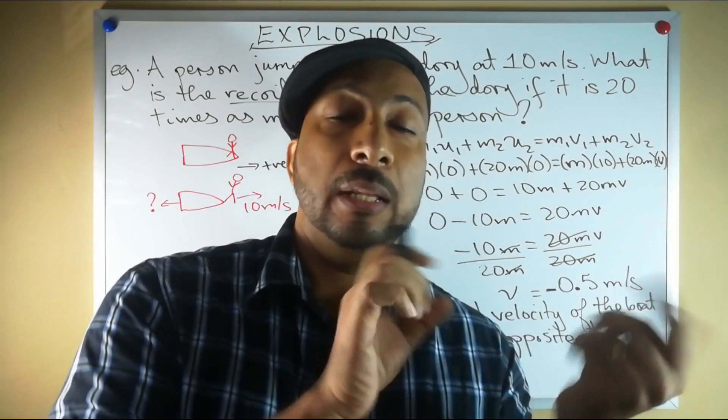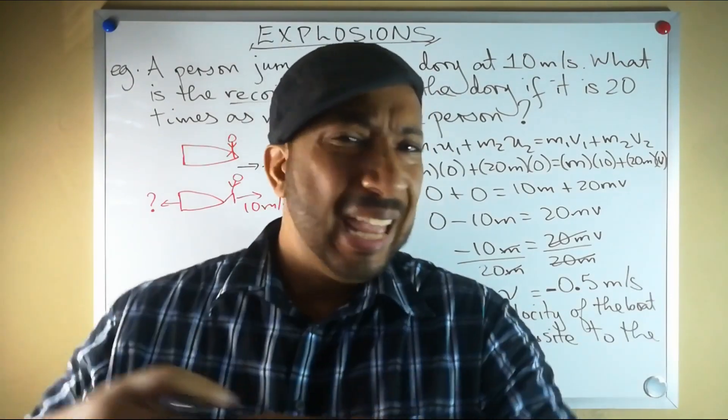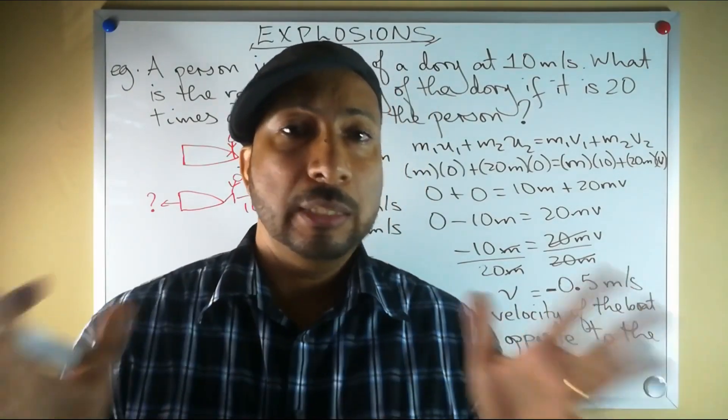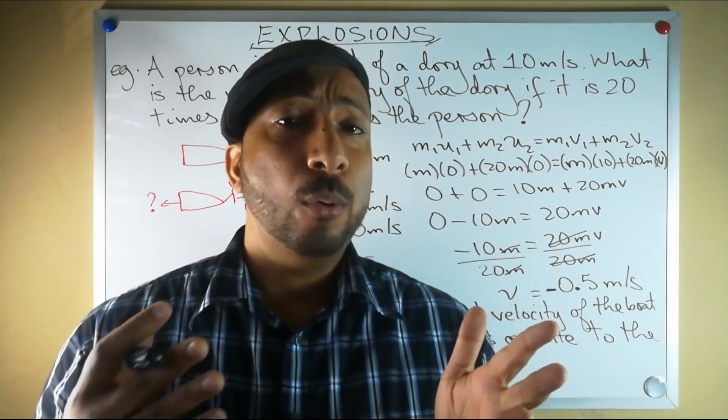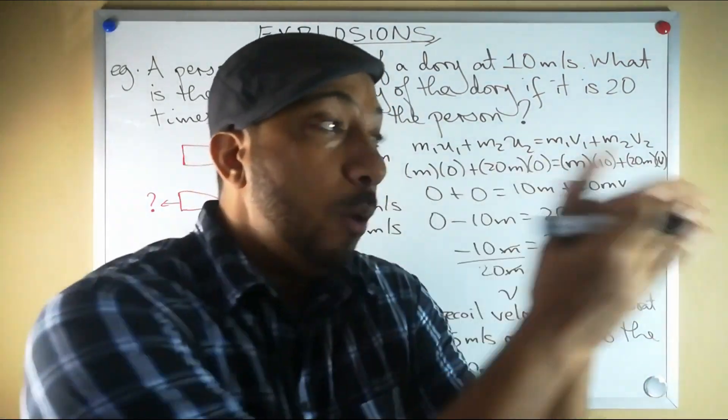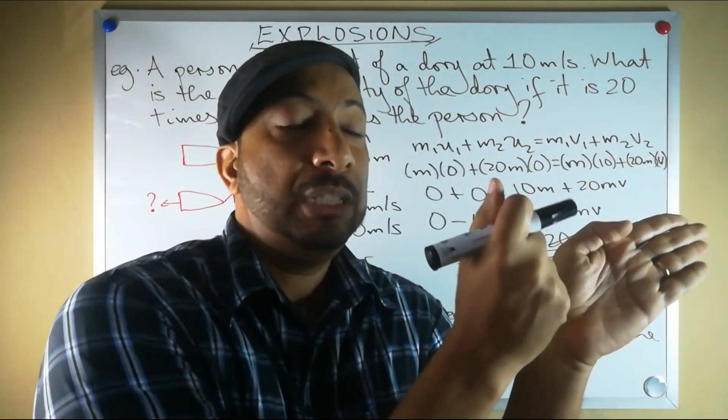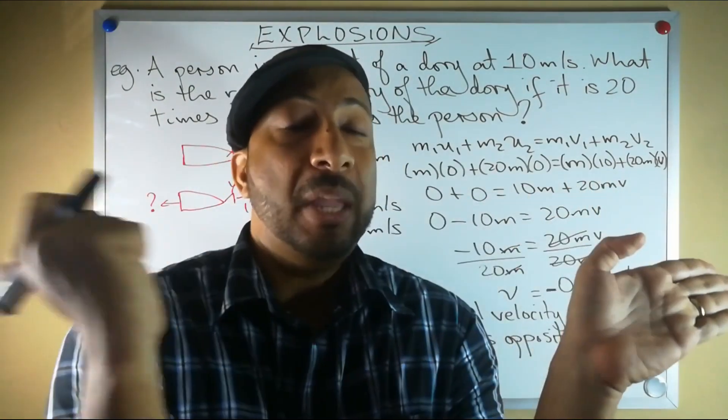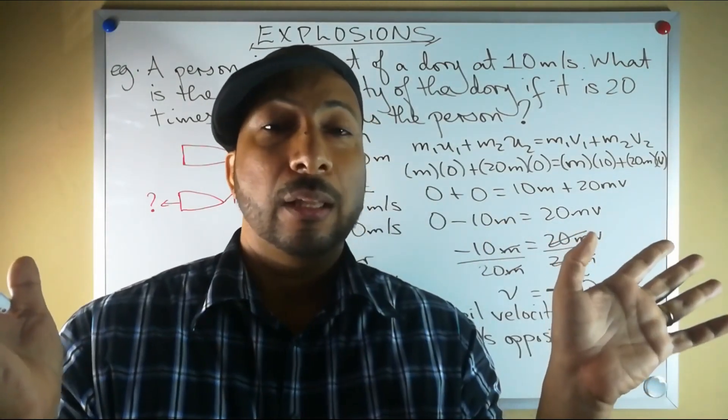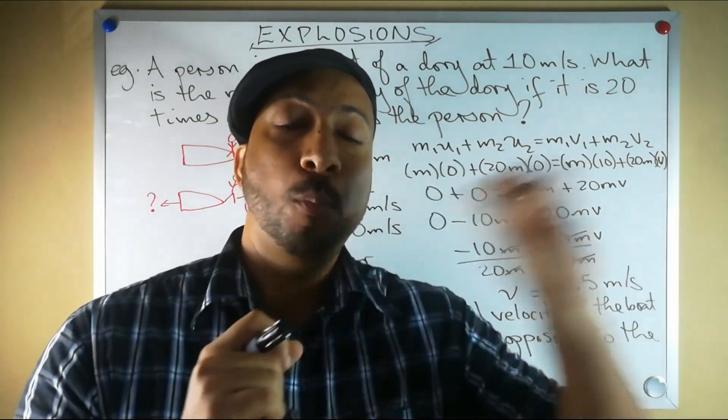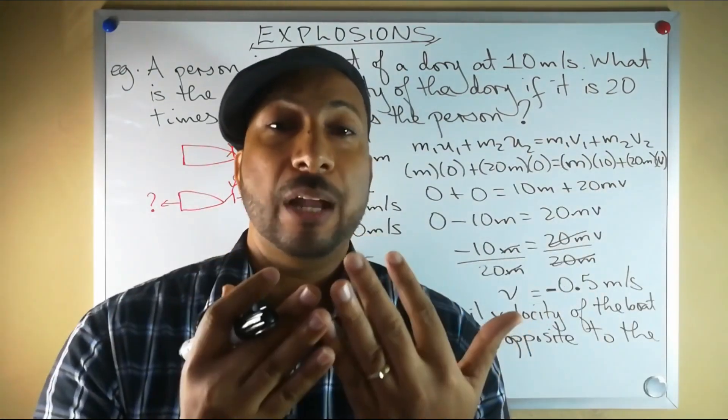If one person moves forward, then somebody else has to move backward. That is how all motion is gained. When you look at a rocket, how does a rocket move forward? Well, the rocket moves forward because it pushes a jet stream of air in the opposite direction. All motion is a consequence of moving things in opposite directions.